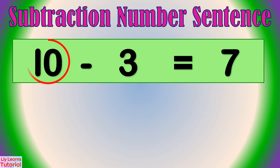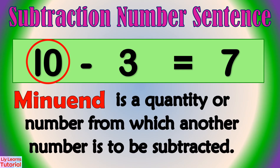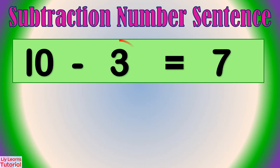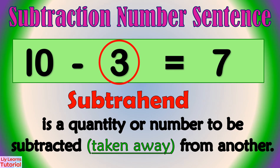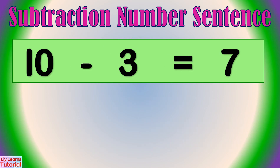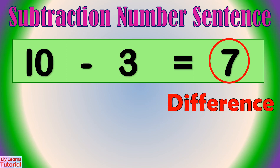This is the minuend. Minuend is a quantity or number from which another number is to be subtracted. Subtrahend is the quantity or number to be subtracted, taken away from another. The answer in subtraction is called difference.